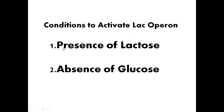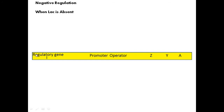The lac operon is activated under two important conditions: first, presence of lactose, and second, absence of glucose. Presence of lactose is obviously necessary to activate the lac operon — in its absence, only a very low level of transcription occurs and the operon is mostly shut off. When there is no lactose, the regulatory gene I codes for a repressor protein.